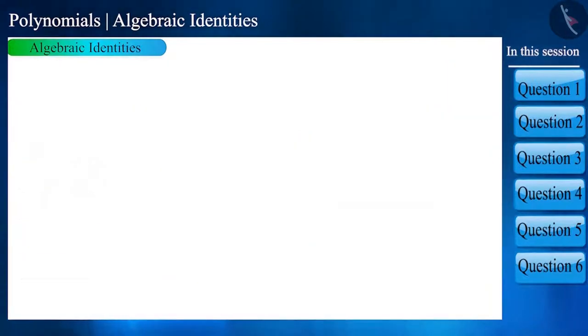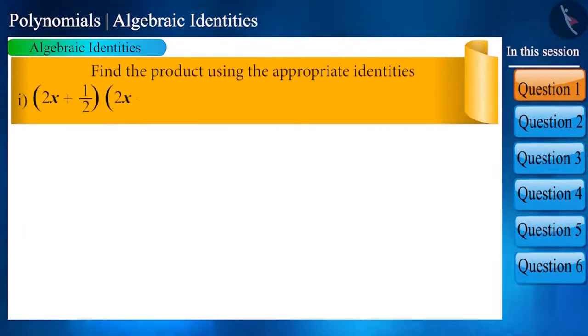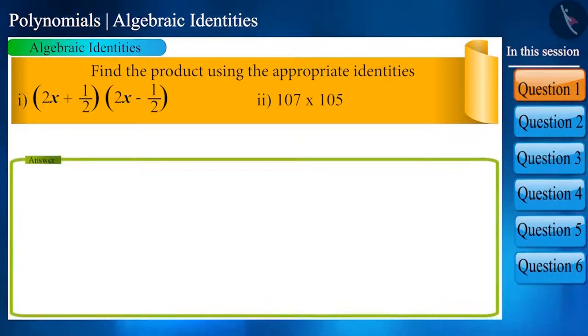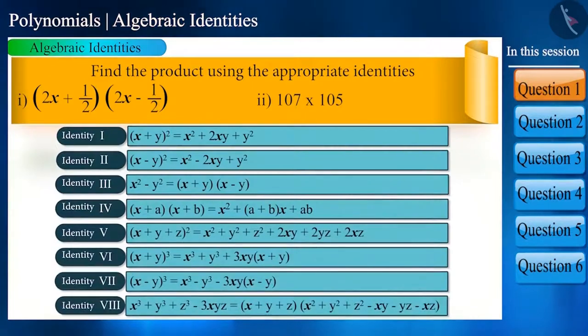So let's start with our first question: find the product using the appropriate identities. By looking at these eight identities, can you tell which one can be used to solve this question?